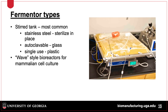A second piece of equipment that functions like a fermenter is the bioreactor. It is called a bioreactor when it is used to grow mammalian cells. A wave bioreactor rocks back and forth, creating a wave-like motion that mixes the cells, media, and dissolved oxygen.